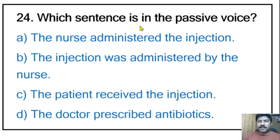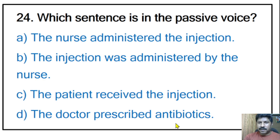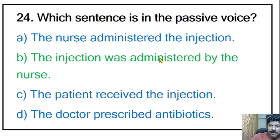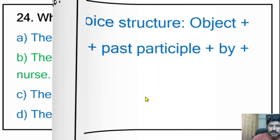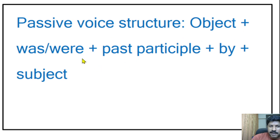Twenty-fourth question: which sentence is in the passive voice? Options: 'The nurse administered the injection,' 'The injection was administered by the nurse,' 'The patient received the injection,' 'The doctor prescribed antibiotic.' The correct answer is 'The injection was administered by the nurse.' Passive voice structure is: object + was/were + past participle + by + subject.